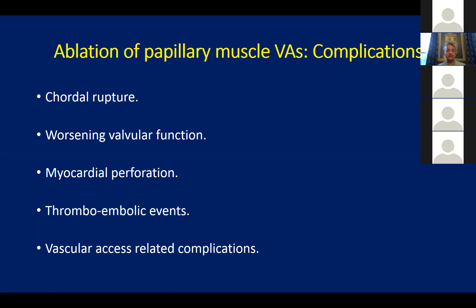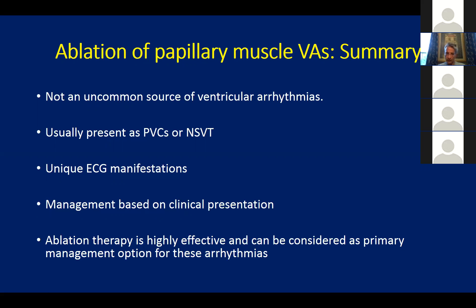In our experience, the incidence of complications is generally low. In our entire series of 137 patients, we had only five complications: two pericardial effusions treated with pericardiocentesis, one pseudoaneurysm, and one groin hematoma. So complications are uncommon if you're careful with your mapping and power delivery. Papillary muscle ventricular arrhythmias are not the most common source - our incidence is about 8% of all ventricular arrhythmias ablated. They have a diverse presentation ranging from isolated PVC in about 70% of cases to polymorphic VT or VF triggered by them in less than 10%.